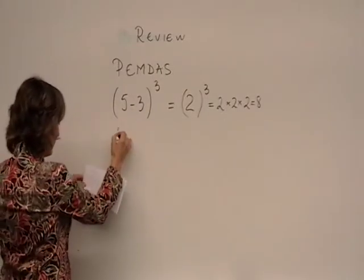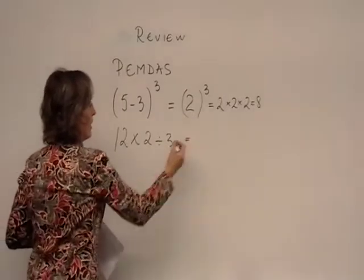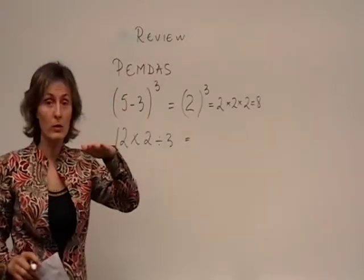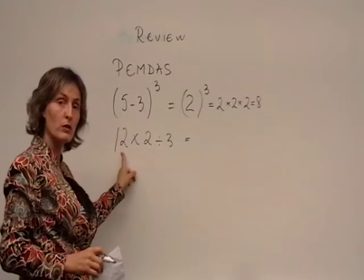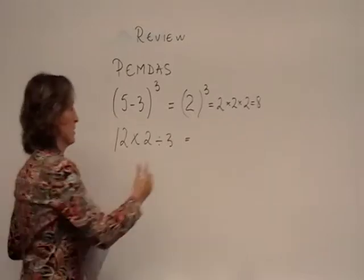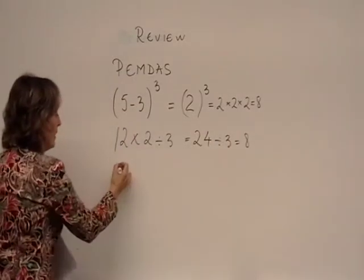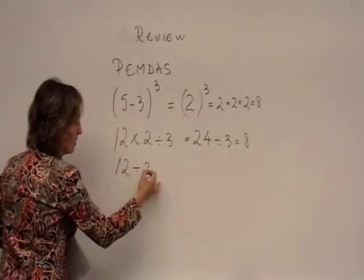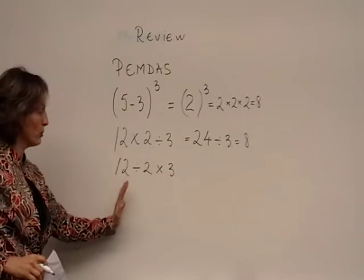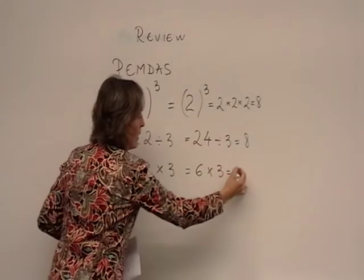Our next example was 12×2÷3. Remember, multiplication and division are equal in power, but we have to follow our order from left to right. So multiplication goes first, 24÷3, and our answer is 8. If we had this equation, from left to right, we do division first. That's 12÷2, which is 6×3, 18.